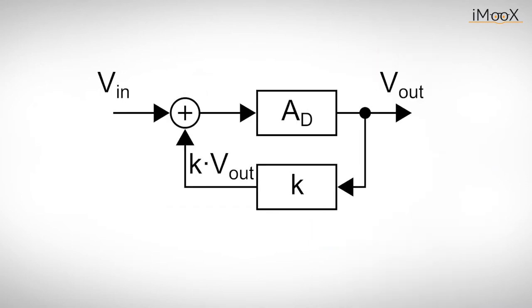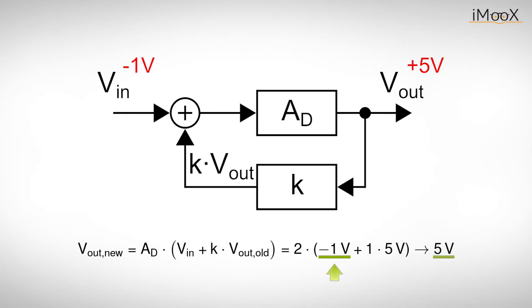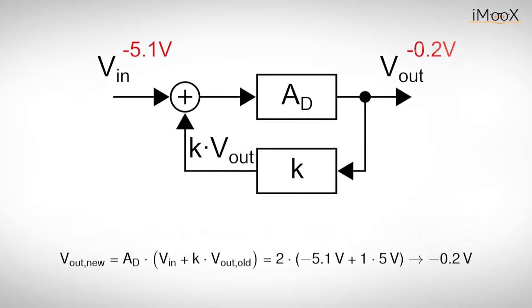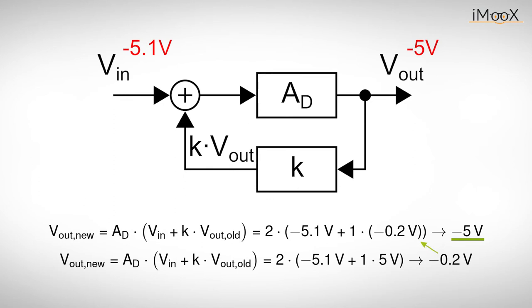Let us assume that our operational amplifier can provide plus minus 5 volts at its output and it is currently stuck at plus 5 volts. Let us apply a negative input voltage of minus 1 volt and recalculate our output voltage to see what happens. As we can see, an input voltage of minus 1 volt is not enough to change the output voltage. Now we apply a negative input voltage of minus 5.1 volts and recalculate our output voltage again. In the first instance we get minus 0.2 volts, which gives in the next instance minus 5 volts.